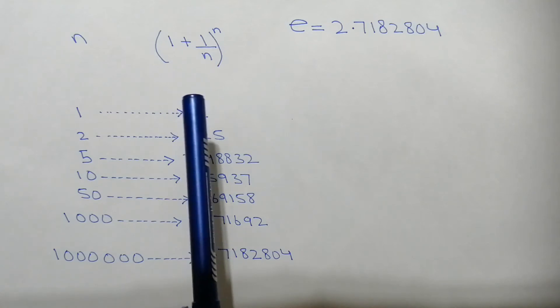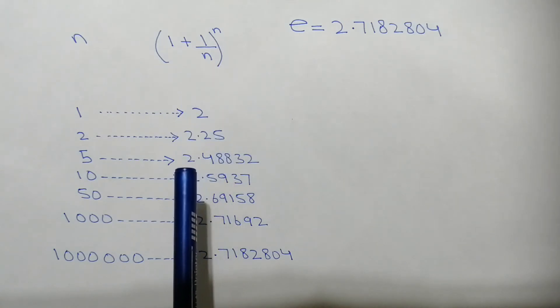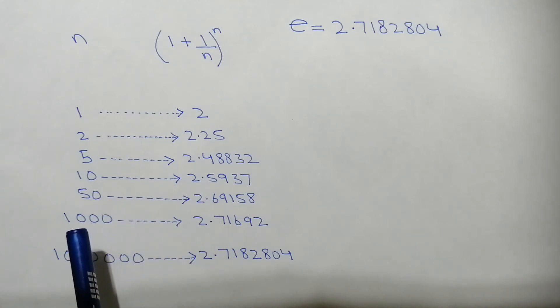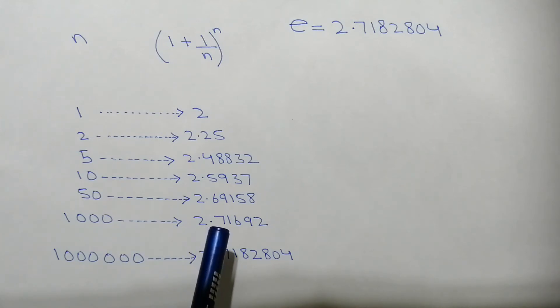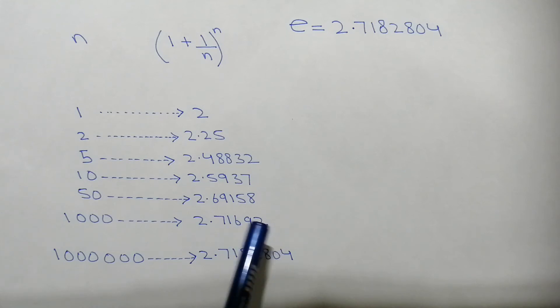So if we put the value of n = 1000, then the answer is 2.71692. Now if we put the value of n = 1 million, then the answer will be 2.7182804.